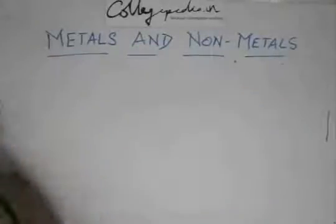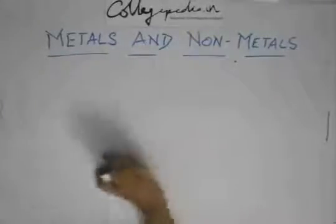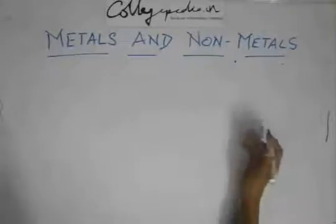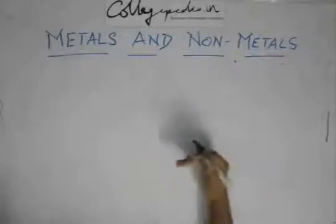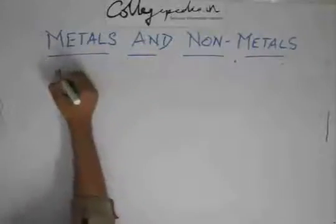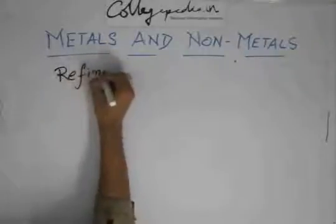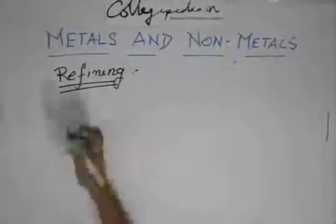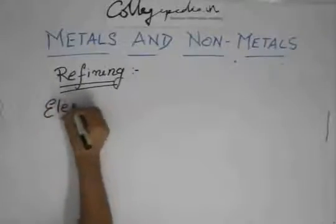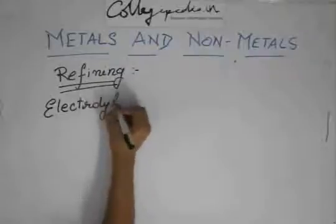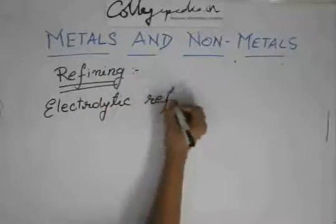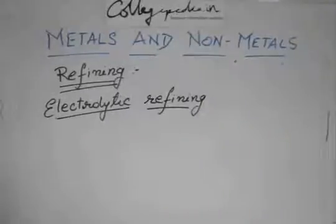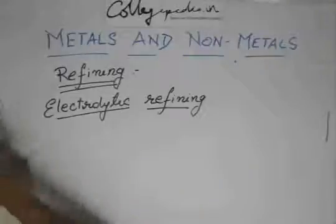Now we come to the next part. The extraction process is over, but the extracted metal might also contain some impurities. We do not want these impurities, so we have to do a bit of refining. We have only one method of refining in our syllabus, which is electrolytic refining, and it is very similar to electrolysis — it also has an anode and a cathode.